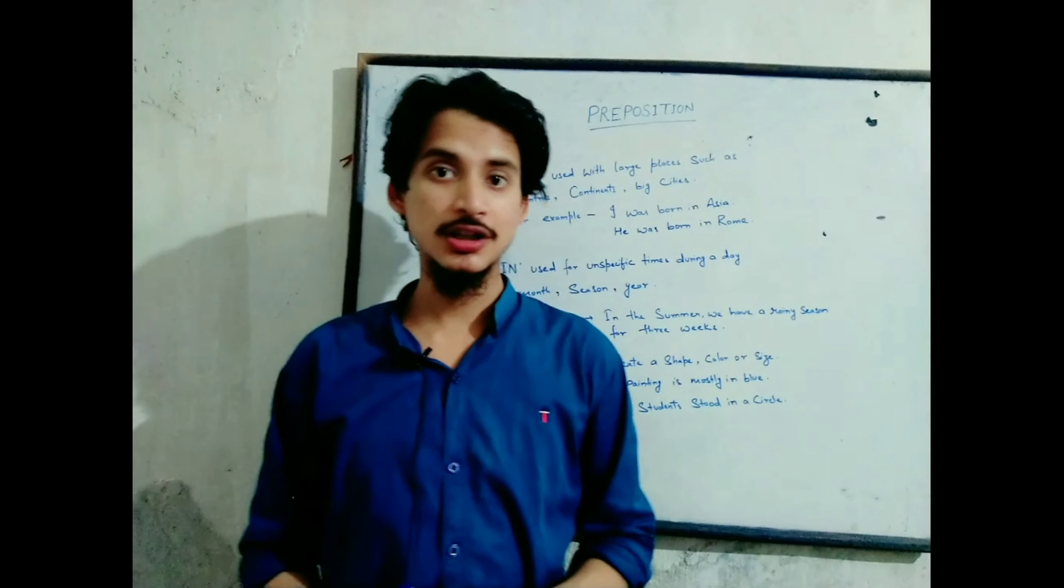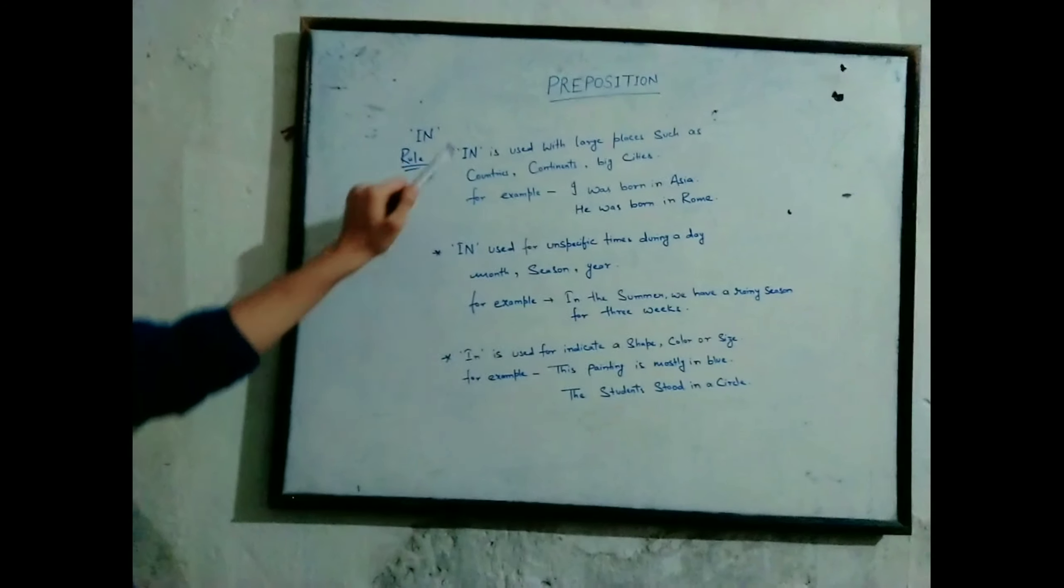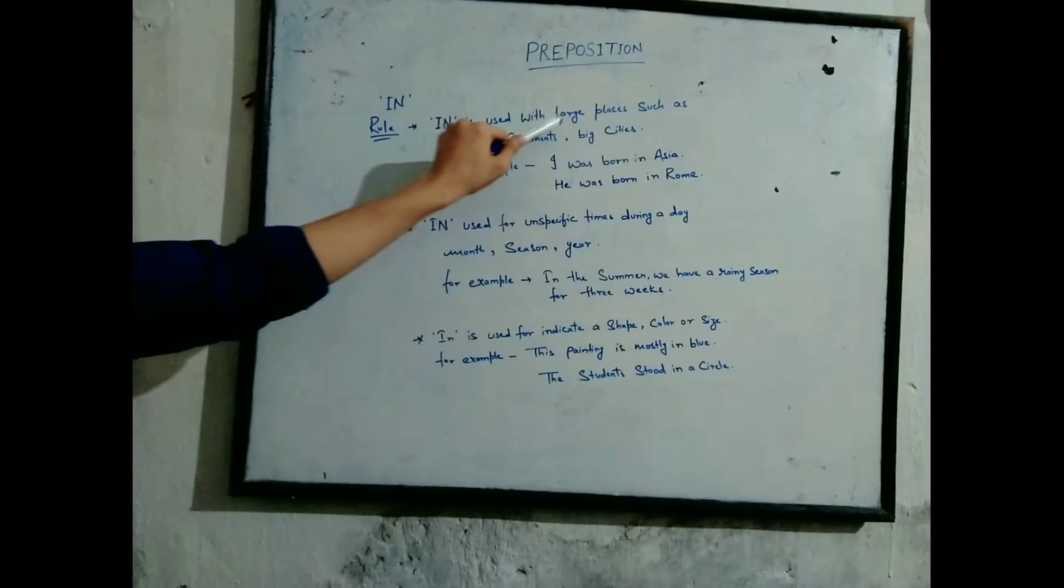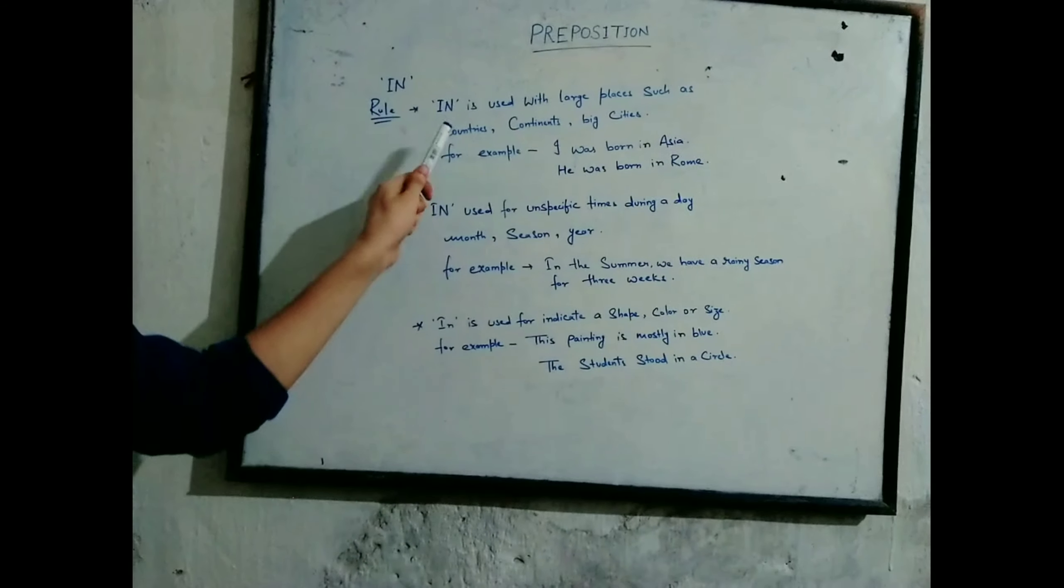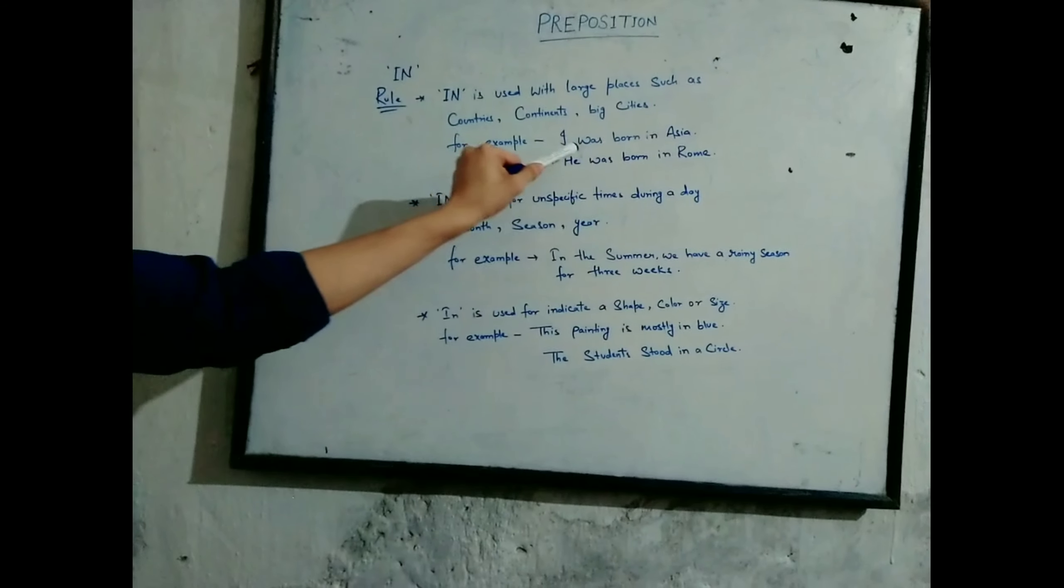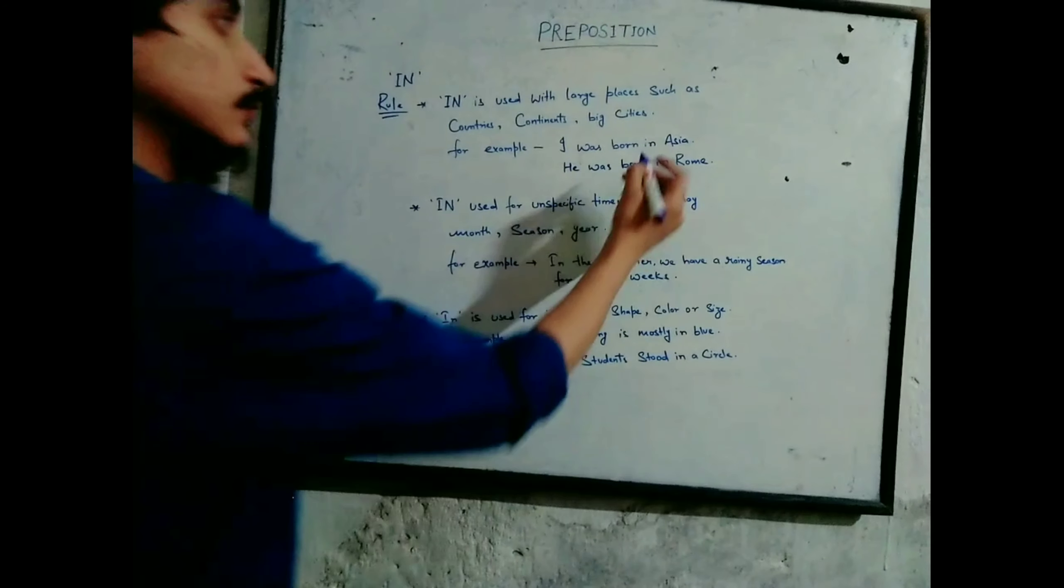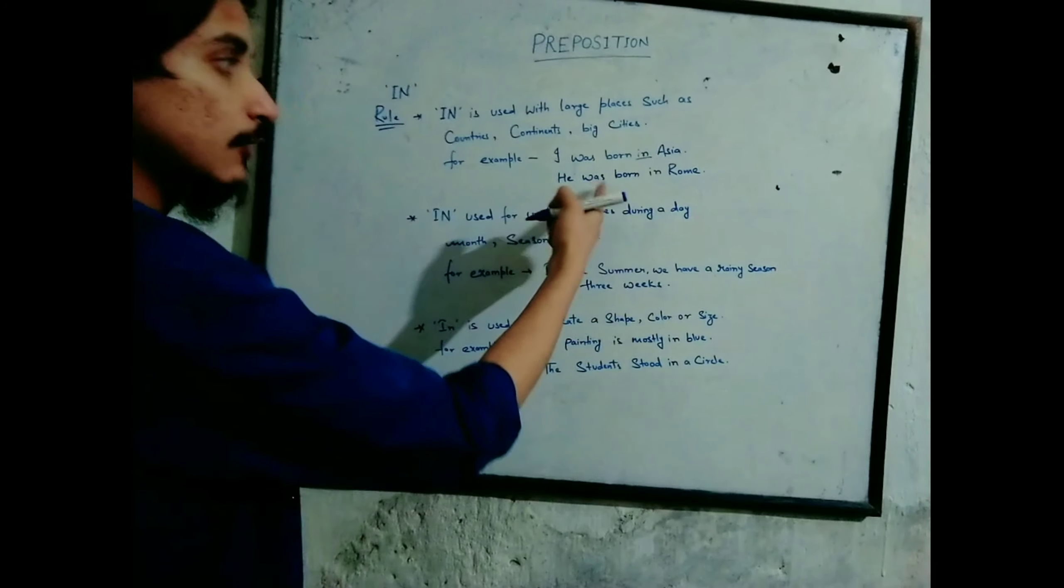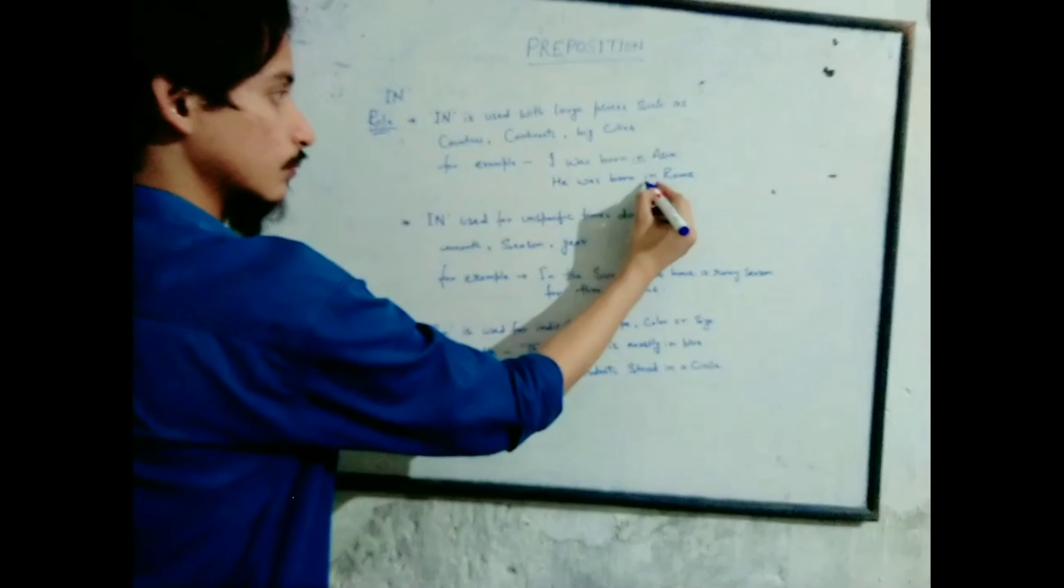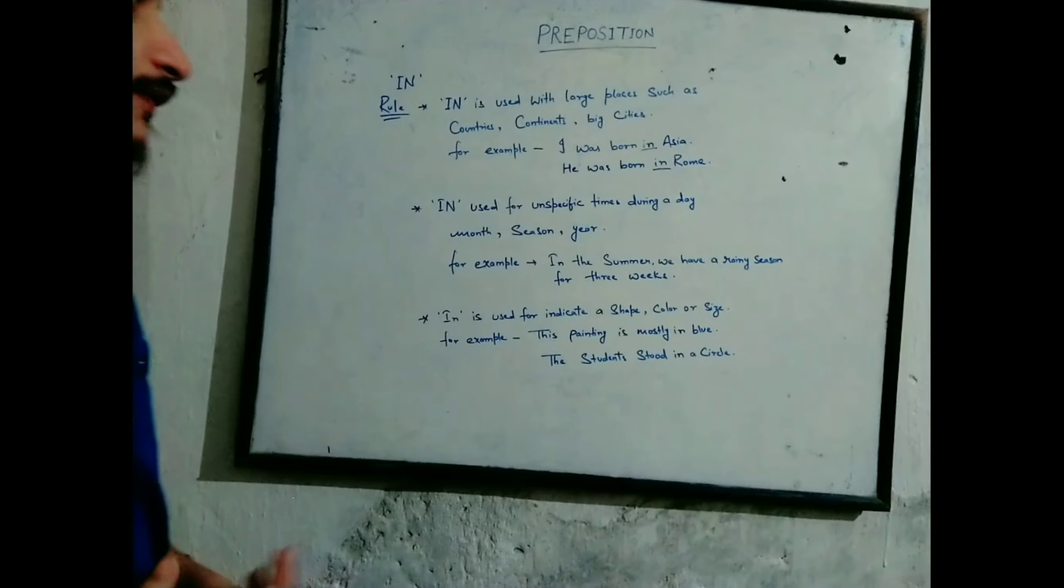Now let's talk about the rules of 'in'. 'In' is used with large places such as countries, continents, and big cities. For example, I was born in Asia. He was born in Rome.